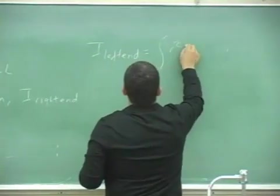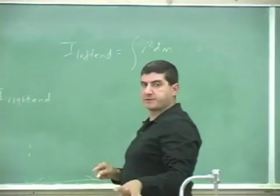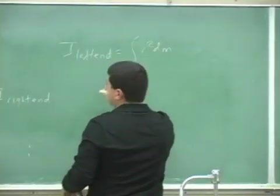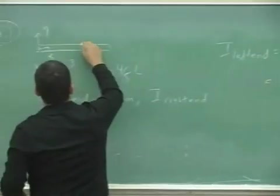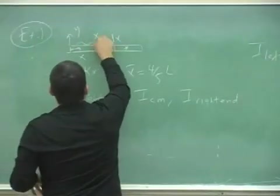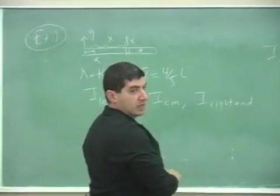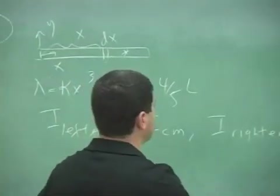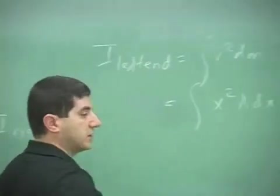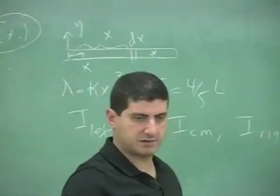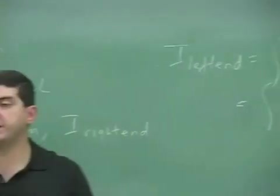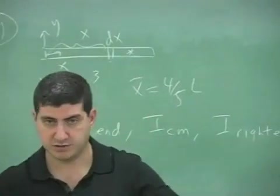So let's do I of left end. Now you do integral r squared dm. That's where you always start from. That's your starting point. And then r becomes x. You take an element here whose thickness is dx, and the r is the distance to that element. So r is the x. And dm is lambda dx, where lambda is the linear mass density. So this is the same technique that we did when we found the center of mass of the object.